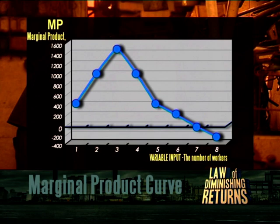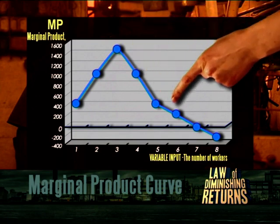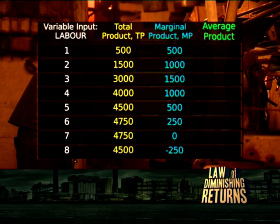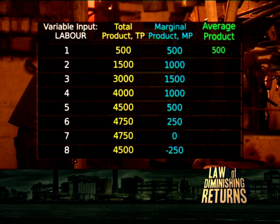With this information, we can now also calculate the average product per worker, and this will give us some measure of productivity. The average product per worker is simply calculated by dividing the total product by the number of workers employed. In the case of one worker, the average product is 500 divided by 1 — that's 500. The average product when there are two workers is 1,500 divided by 2, which gives us 750, and so on. These figures are given in column three.